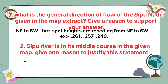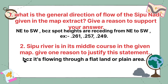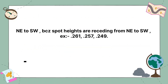Sipu river is in its middle course in the given map. Give one reason to justify this statement. The reason is because it is flowing through a flat land or plain area.